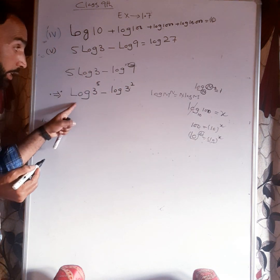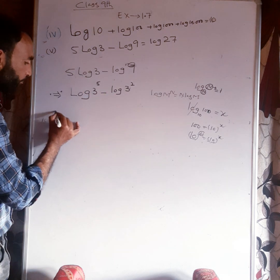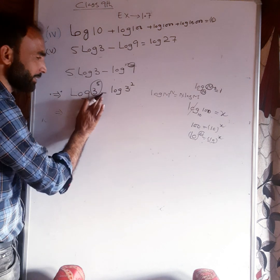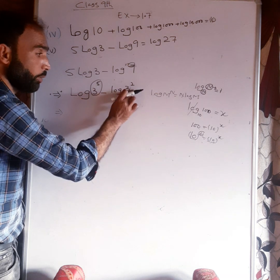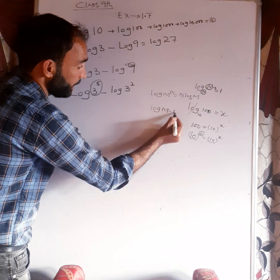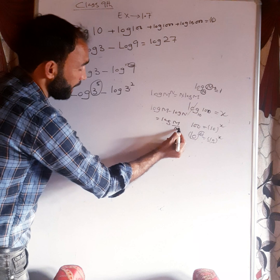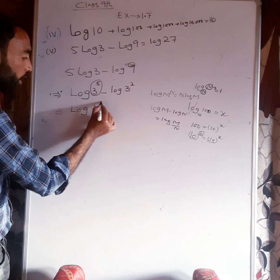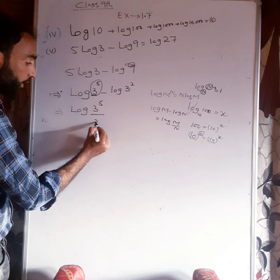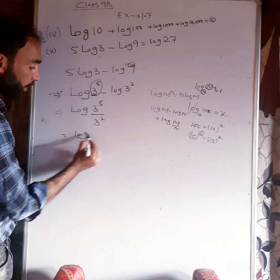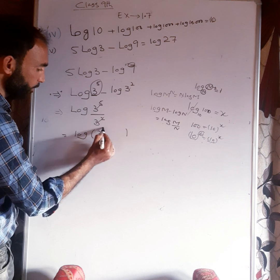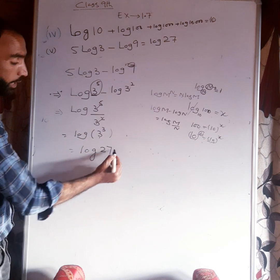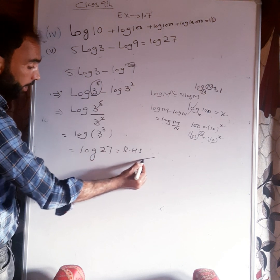Using the property log m minus log n equals log m divided by n: log three to the power five minus log three squared equals log of three to the five divided by three squared, which equals log three cubed, which equals log twenty-seven. This equals the RHS.